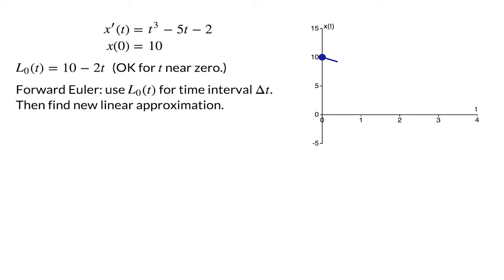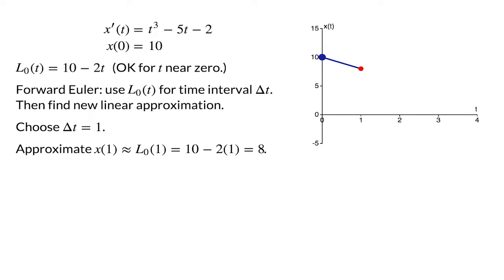We can expect the linear approximation L0 of t to be an okay approximation to the real solution x of t for small values of t. To estimate values of the solution for longer times, one option is the forward Euler algorithm, in which we pick some small length of time delta t and use L0 of t for that small interval of time. Then we calculate a new linear approximation and continue the process. Let's illustrate the forward Euler algorithm by choosing an interval length delta t of 1. We use our linear approximation L0 of t to estimate the value of the solution at t equals 1. This approximation for x of 1 is 10 minus 2 times 1, or 8.